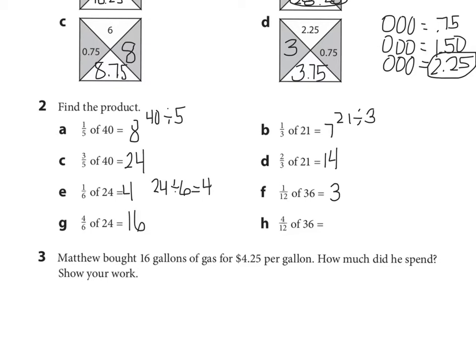Looking at H, 4 twelfths of 36. I already know that 1 twelfth is 3. So 4 twelfths is 4 of those groups. 4 times 3 is 12.